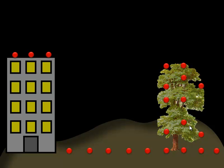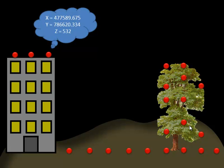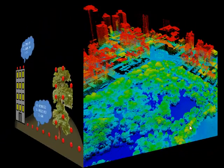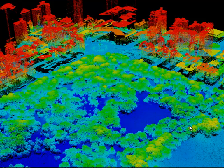LIDAR returns are geospatial data. They contain X, Y, and Z coordinate information. These points together are collectively referred to as a point cloud, and here we are looking at a LIDAR collect over New York City. We're looking west towards Columbus Circle — all the trees that you see there are in Central Park. This LIDAR point cloud is a collection of hundreds of thousands of individual LIDAR points. In this particular example, a color ramp has been applied to the Z value. The blue color reflects the lowest elevations, and the red corresponds to the highest elevations.